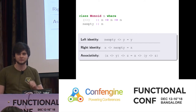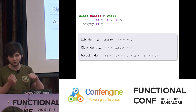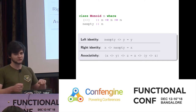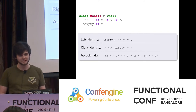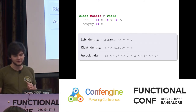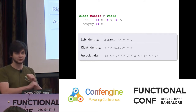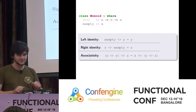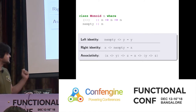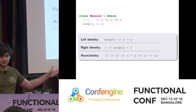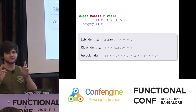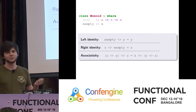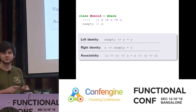The Left Identity Law says if you append empty onto something Y, the result must equal Y — appending empty doesn't do anything. We call empty the Identity or Neutral Element. The Right Identity Law is similar but flipped: appending empty on the right-hand side also does nothing. Then we have Associativity: if you combine three things X, Y, and Z, combining X with Y first and then with Z gives the same answer as combining X with the result of combining Y with Z. Another way to think about it: we can add and remove parentheses wherever we want without changing the result.